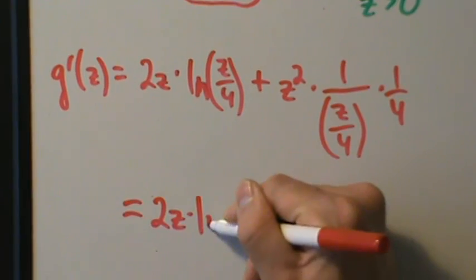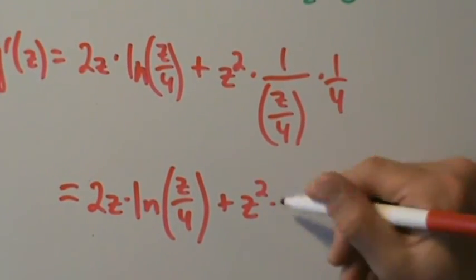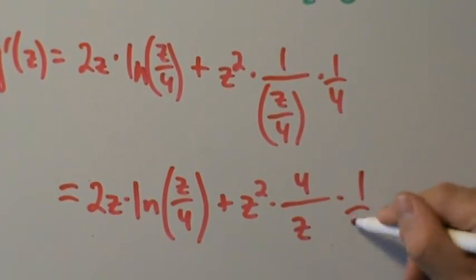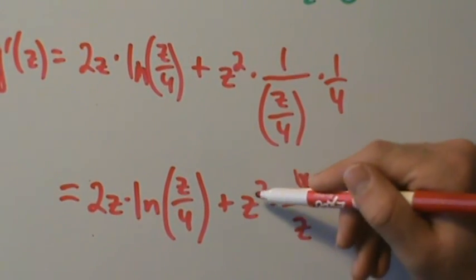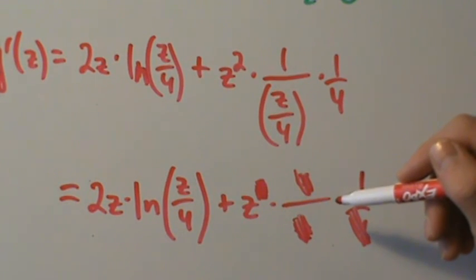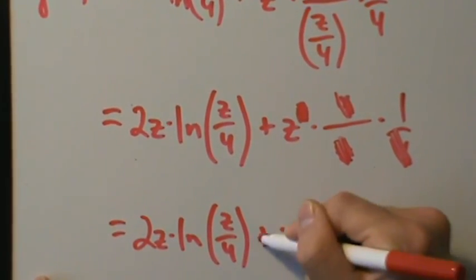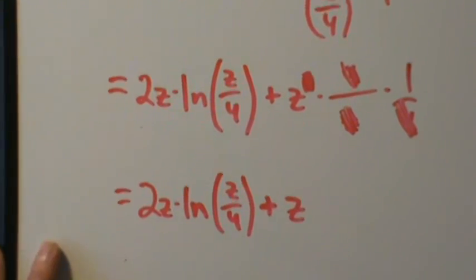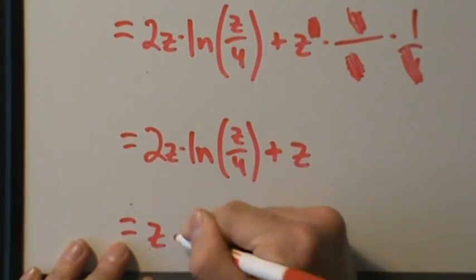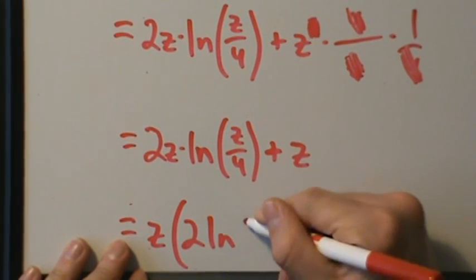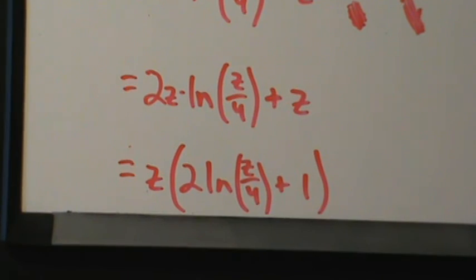Now let's simplify. We have 2z times natural log of z over 4, plus z squared times — if we divide by z over 4 we're multiplying by 4 over z, and still multiplying by one-fourth. The 4 and one-fourth cancel, and one of the z squareds cancels with the z in the denominator. So we get 2z times natural log of z over 4, plus z. There's a common factor of z, so we factor it out: g prime of z equals z times the quantity 2 natural log of z over 4 plus 1. That's our derivative in factored form.